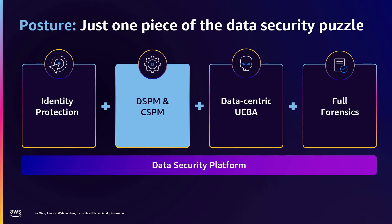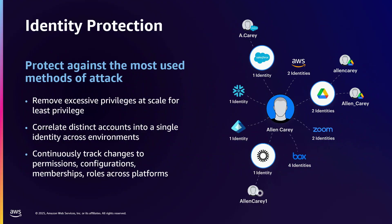We need to protect identities. We need to measure and improve data and configuration posture, but we also need data-centric user and entity behavior analytics. We need to monitor the data — much like a bank monitors your money. My credit card called me last week because my card number had been cloned and was being used to buy gas in Montreal. My credit card company knows Brian is not in Montreal, he doesn't buy gas at 2 in the morning, and that's a threat pattern indicative of a stolen card. It took 30 seconds for them to send a text, an email, and call me to tell me my card had been shut off. You need to do the same thing with data, and you need a full forensic record — not just of posture, not just of identity, not just of access and authorization changes, but of data access activity.